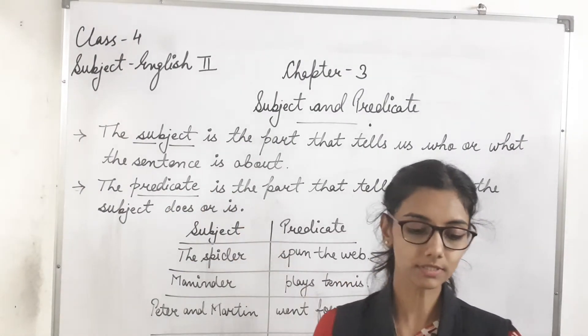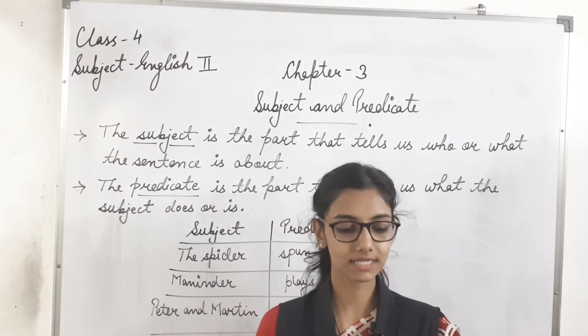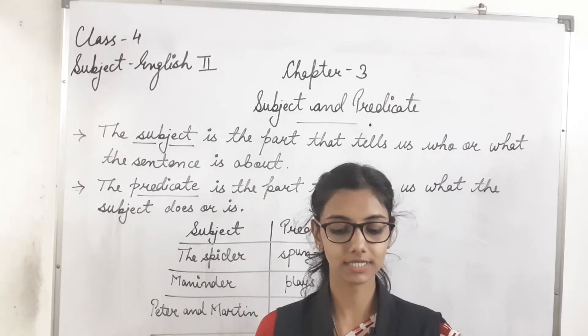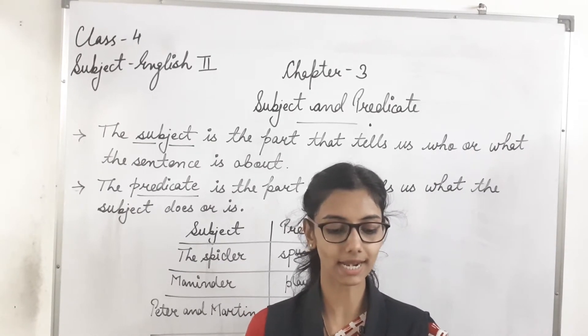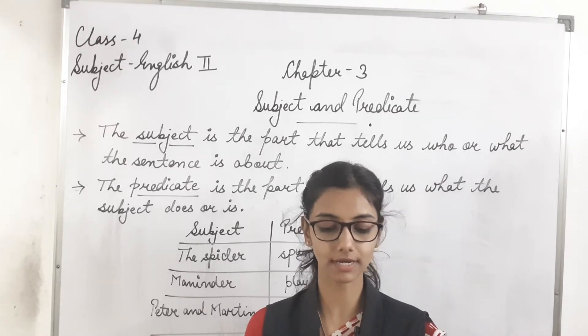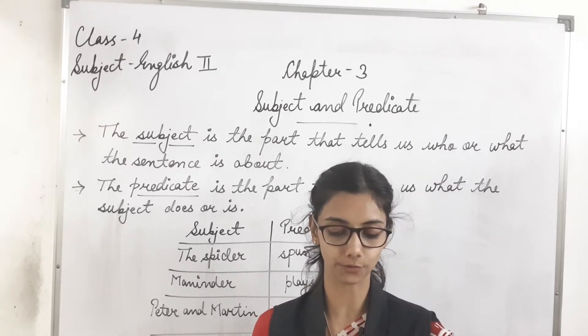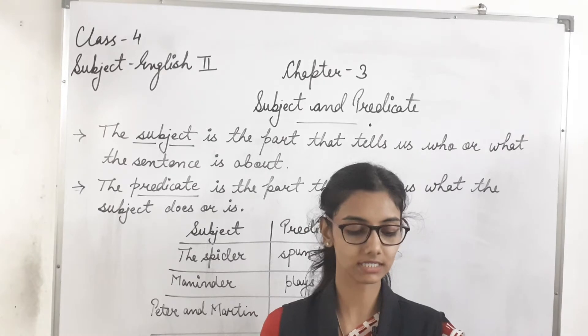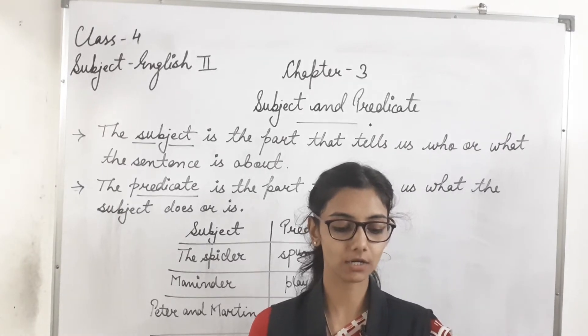Now look into your books. Read the sentences. Identify what the sentence are about and write them in the blank. One has been done for you. Look at these sentences. The car is yellow in colour.